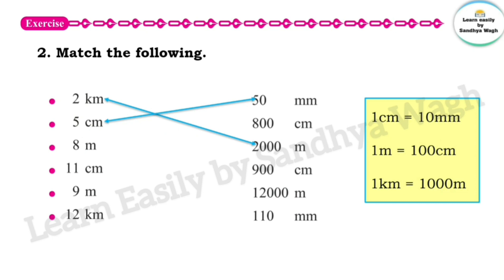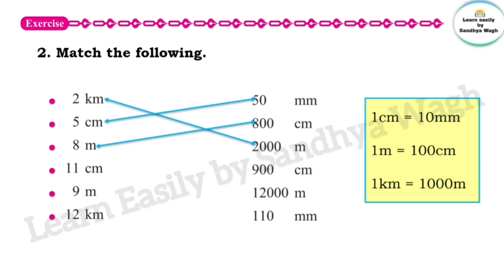8 meters is equal to how many centimeters? 1 meter is equal to 100 centimeters, so 8 meters is equal to 800 centimeters. Next, 11 centimeters: 1 centimeter is equal to 10 millimeters, so 11 cm is equal to 110 mm. Next, 9 meters: 1 meter is equal to 100 cm, so 9 meters is equal to 900 cm.